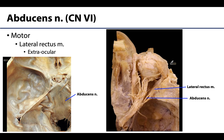The abducens nerve, cranial nerve VI, is relatively simple — entirely efferent, innervating the lateral rectus muscle, which abducts the eye, hence the name abducens. The abducens nerve is notable for traveling through the lumen of the cavernous sinus before exiting through the superior orbital fissure to enter the orbit.